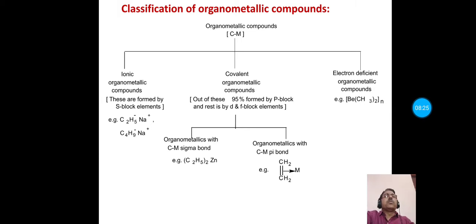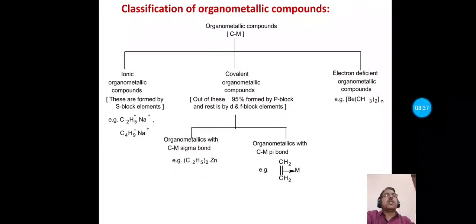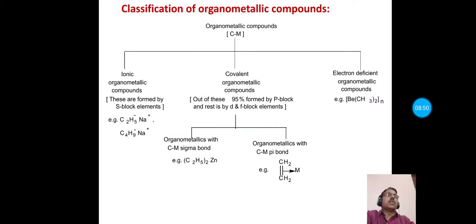Regarding the properties of ionic organometallic compounds: they dissolve in polar solvents like water, they are crystalline in their pure form, and they can be easily hydrolyzed by water to form hydrocarbons.